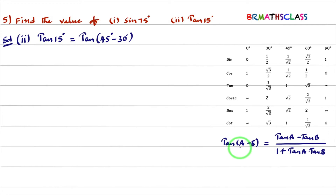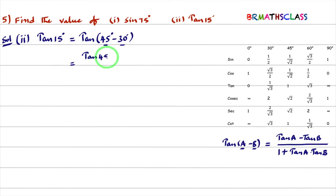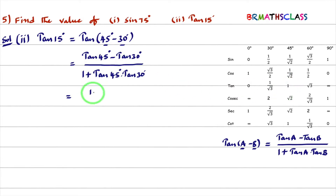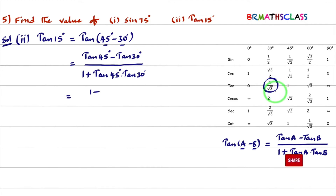The formula for tan(A − B) is (tan A − tan B)/(1 + tan A·tan B). Here A = 45°, B = 30°. Wherever A appears, write 45°; wherever B appears, write 30°. So: tan 45° = 1, tan 30° = 1/√3. We get: (1 − 1/√3)/(1 + 1·(1/√3)).